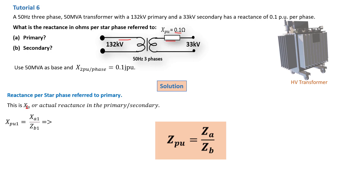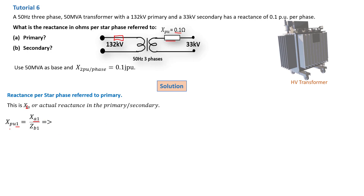The general formula is: X per unit 1 equals XA1 over ZB1, where subscript 1 denotes the primary and subscript 2 the secondary. XA1 would be the actual reactance on the primary of the transformer, but we don't have that value. We have X per unit 2 (secondary) but not X per unit 1, so we cannot directly find XA1. We must work the other way around — from the secondary back to the primary.